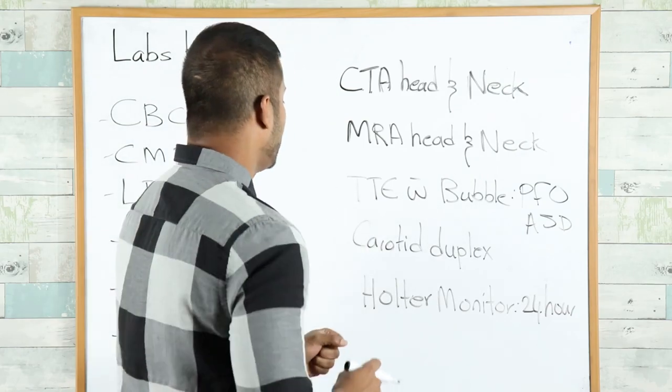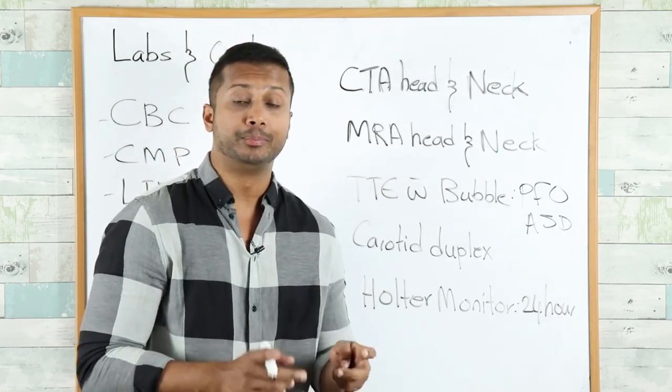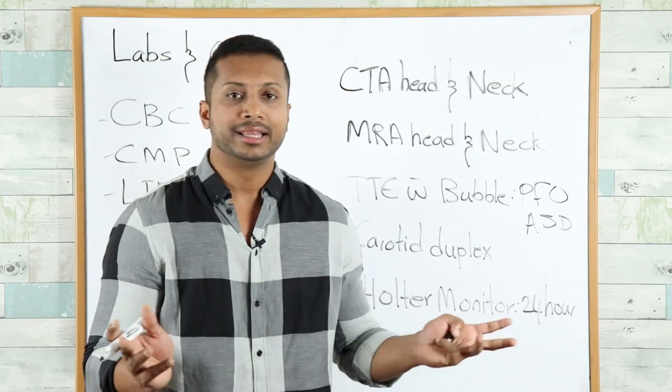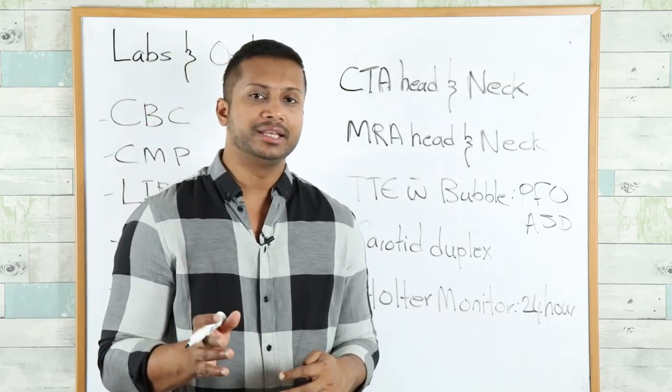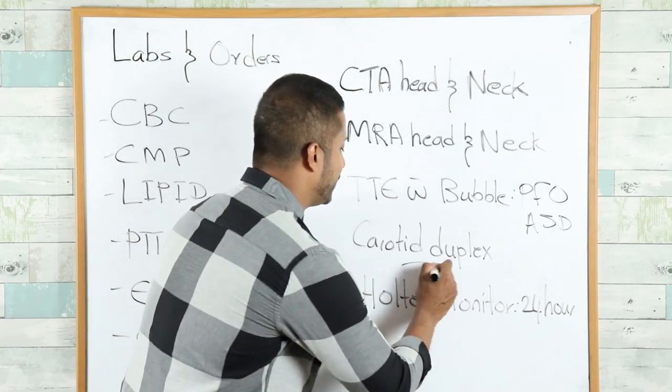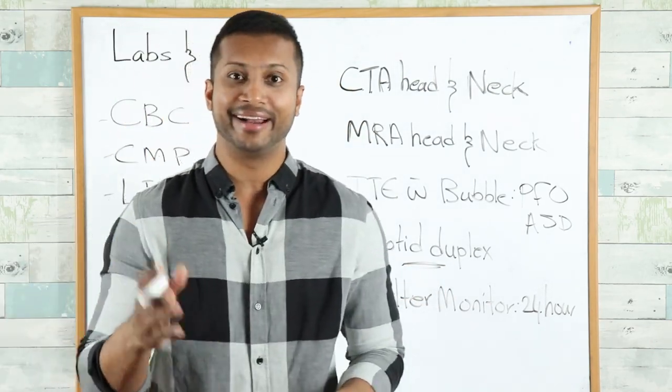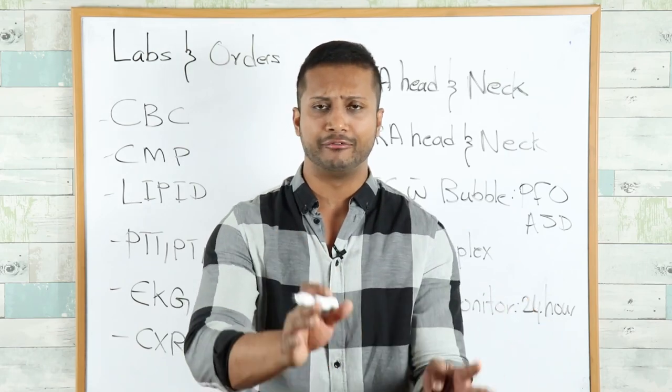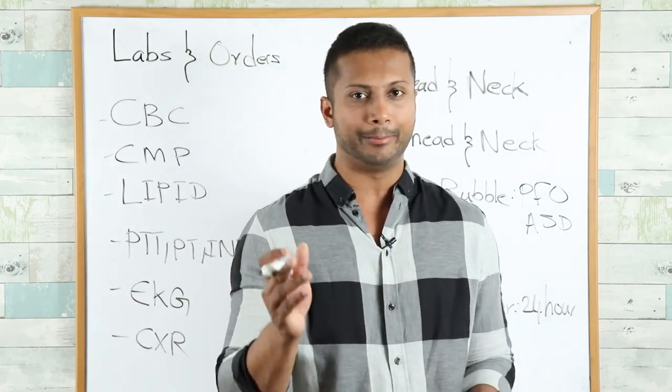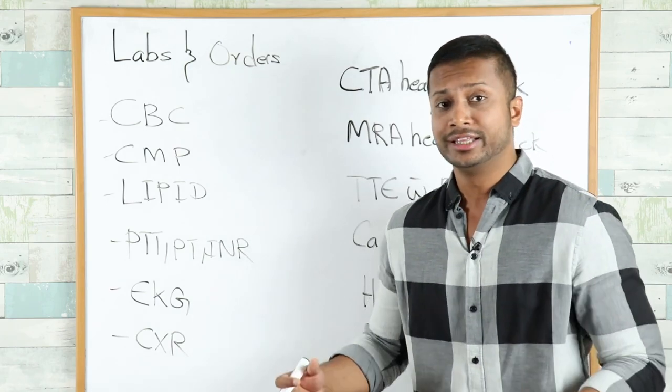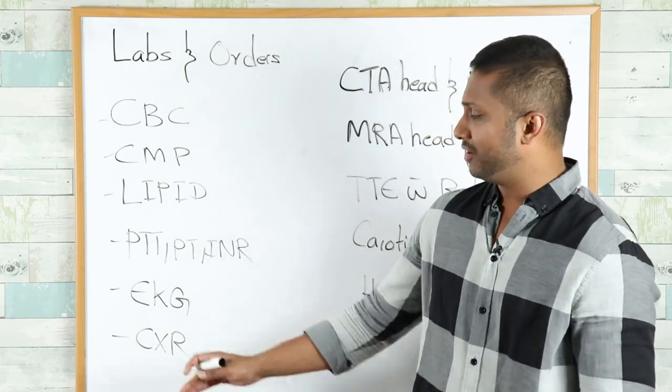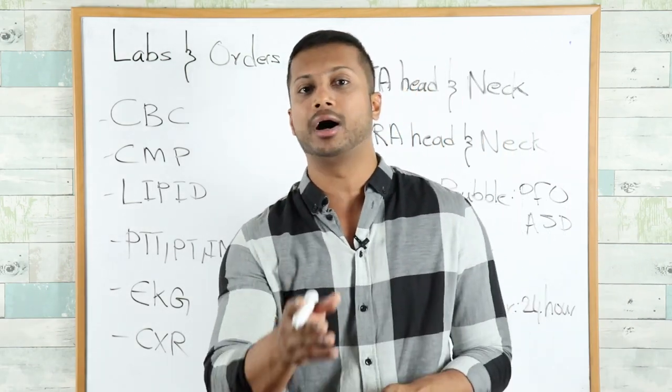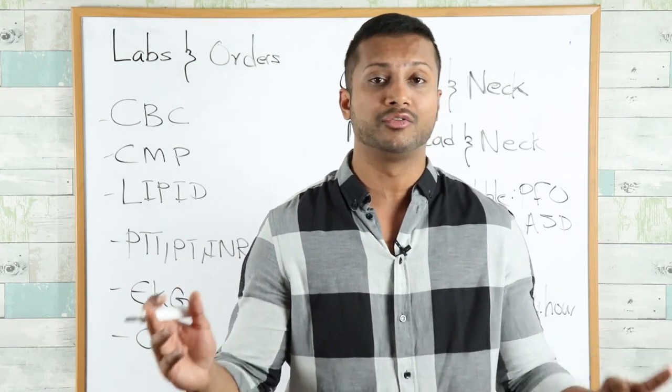Next you're going to do a carotid duplex. If you're doing a CT angio or MRA of head and neck, you don't have to do carotid duplex. Back in the day we always did carotid duplex, but now we mostly do CTA or MRA. The next test is a 24-hour Holter monitor. This doesn't have to be done in everybody. If your EKG already shows baseline atrial fibrillation or flutter, you don't need Holter. But if there's no abnormal rhythm seen on EKG, it's a great idea to get Holter monitor because you could still have paroxysmal atrial fibrillation or flutter.